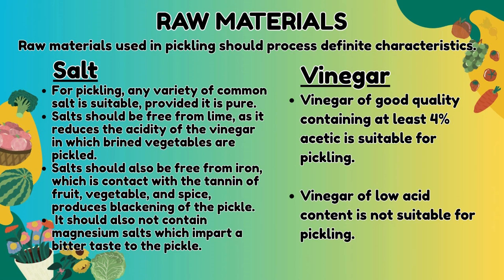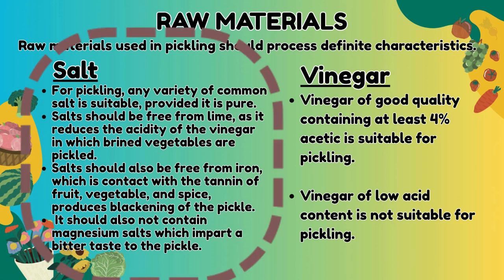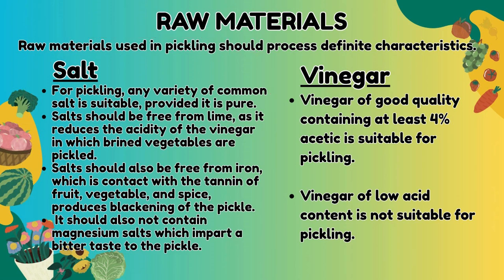Raw materials used in pickling should have definite characteristics. For salt: any variety of common salt is suitable provided it is pure. Salt should be free from lime, as it reduces the acidity of the vinegar. Salt should also be free from iron, which in contact with the tannin of fruit, vegetable, and spice produces blackening of the pickle. It should also not contain magnesium salts, which impart a bitter taste.